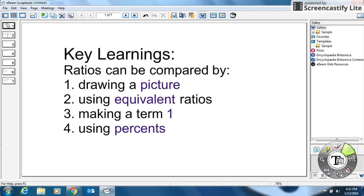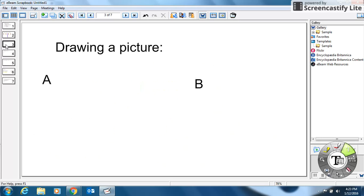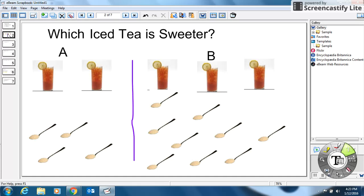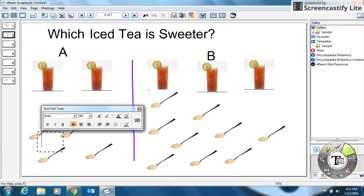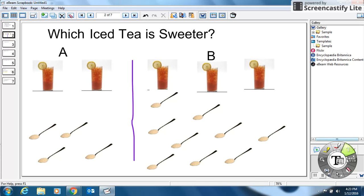So the first key learning is we are going to draw a picture. Basically, I'm going to go back here. Instead of redrawing all this stuff, I'm going to start sorting. So when you draw a picture, we're going to take our two glasses of water here, and I'm going to start reorganizing my tablespoons of iced tea powder. So in this example A, you can see for every glass of water, there is exactly two tablespoons of iced tea mix.